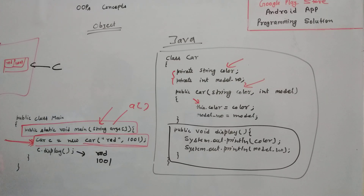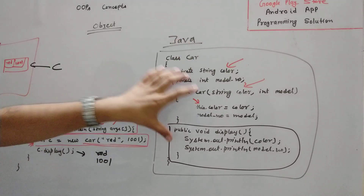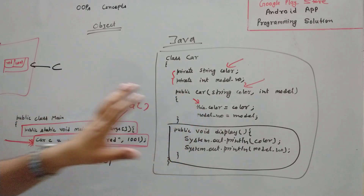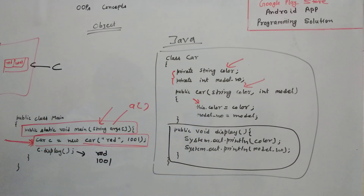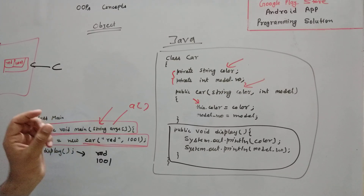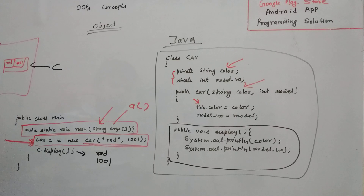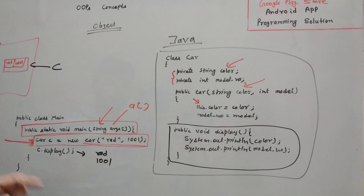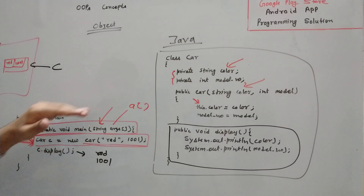We have a main class, and we are creating the object of Car class inside the main class. We can define the main function inside any class, but whenever we have defined a public static void main inside any class, the program starts execution from that main function. It might be possible that we can define multiple classes in a single file, but we can define the main function only in a single class — we cannot define main function in each class.